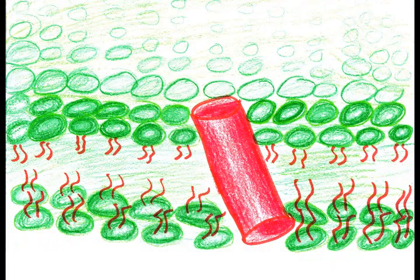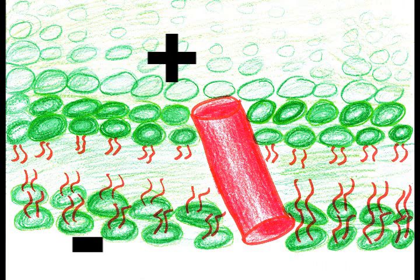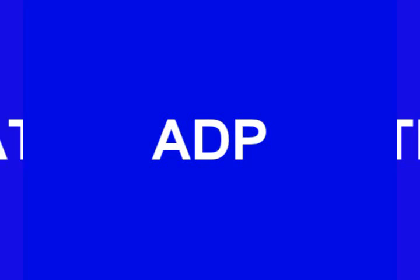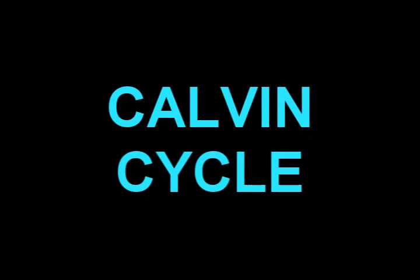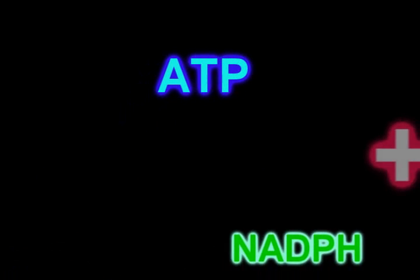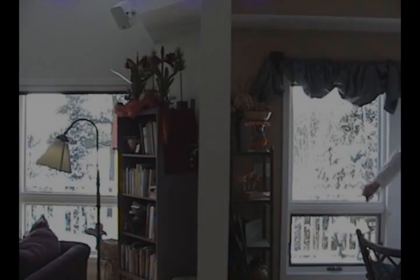When electrons pass from the chlorophyll to the NADP, the inside of the membrane fills with positively charged hydrogen ions. This makes the outside of the thylakoid membrane have a negative charge and the inside have a positive charge, thus generating the energy to convert ADP to ATP. This whole light-dependent process uses water, ADP, and NADP. The ADP and NADP come from the Calvin cycle, or light-independent process. What comes out of the light-dependent process is ATP and NADPH. These compounds are then used in the cell as energy to build energy-containing sugars from low-energy compounds.